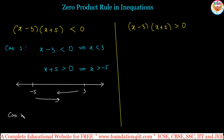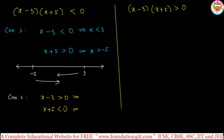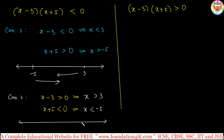In case 2, taking the reverse: if x minus 3 is greater than 0 then x plus 5 is less than 0. From x minus 3 greater than 0, x is greater than 3. From x plus 5 less than 0, x is less than minus 5. On the number line, x greater than 3 means values to the right of 3, and x less than minus 5 means values to the left of minus 5. There is no overlap, so there is no common solution for case 2.